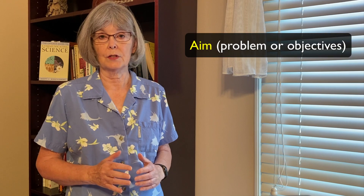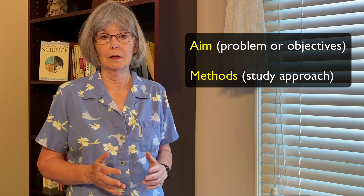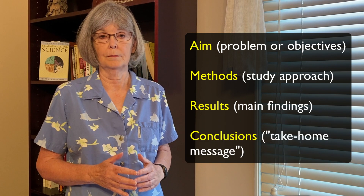An abstract should reflect all the parts of your paper, but in shortened form. And that's what structured abstracts do — they include the key components that should go into an abstract, and each component has a heading: the aim of the study, the methods, the results, and the conclusions or significance of the work.